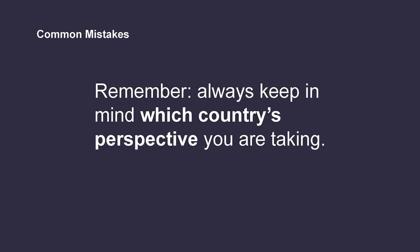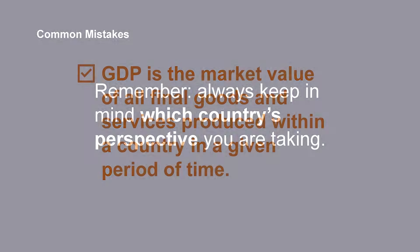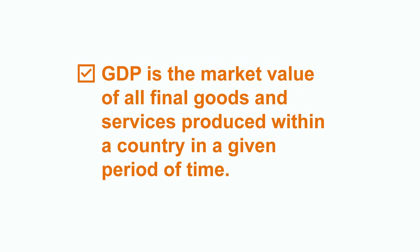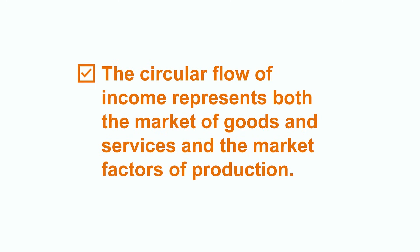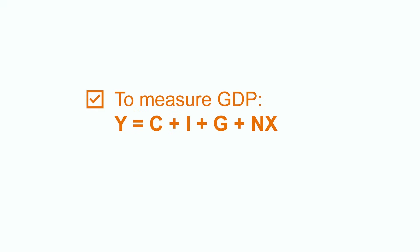Stand from the economy's point of view. Exports is what the foreign sector spends in an economy, and imports are what an economy spends in other countries. We have seen in this video what GDP is — the market value of all final goods and services produced within an economy in a given period of time. We have also learned about the circular flow of income, which represents both the market of goods and services and the market of factors of production. In this way, we understood how income equals spending, and that allowed us to establish the composition of GDP, which is the result of adding consumption, investment, public spending, and net exports.